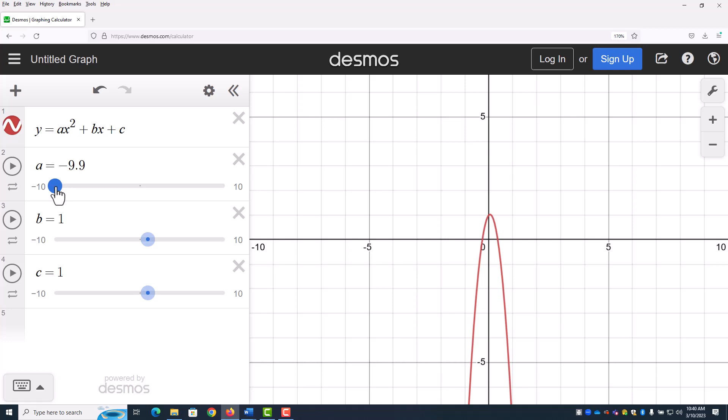You can also manually slide it. So the interesting change happens between negative a and then what happens when a is 0? Well, when a is 0, look at it. That means we don't have this squared term. We just have a linear term. So what do we have? Of course we have a straight line. It makes sense, right?